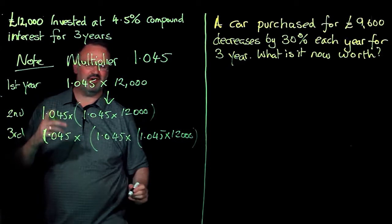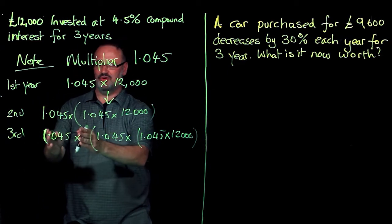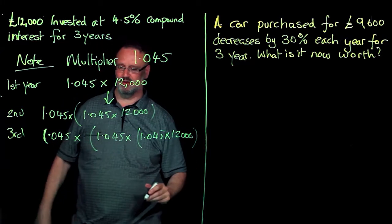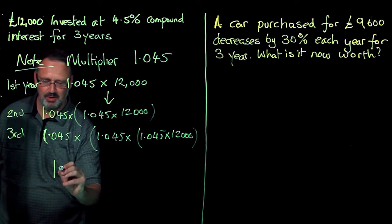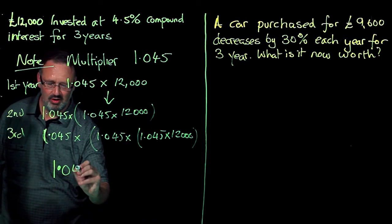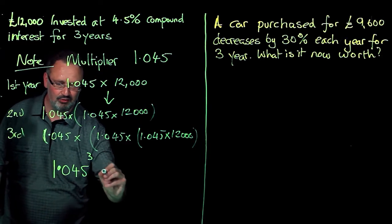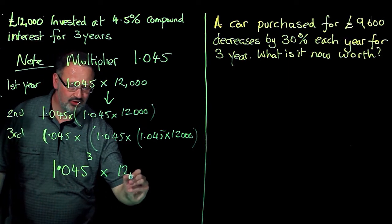It looks rather long-winded, but I want to emphasise 1.045 times 1.045 times 1.045. This will be 1.045 to the power of 3 times my original amount.